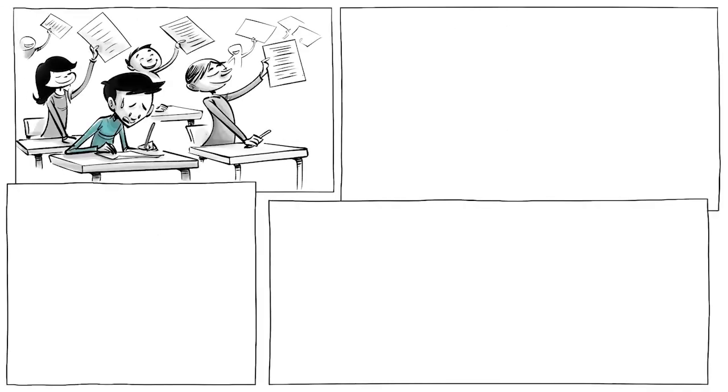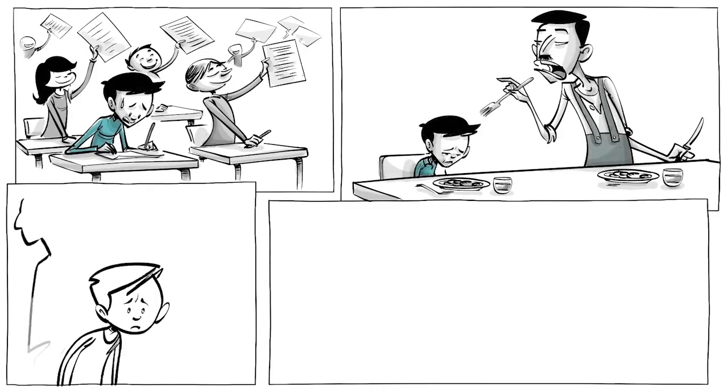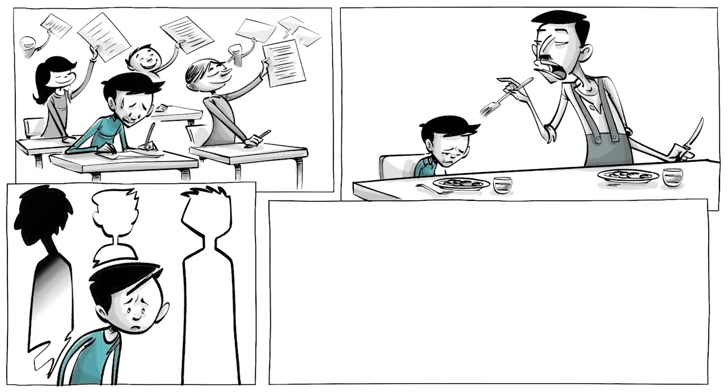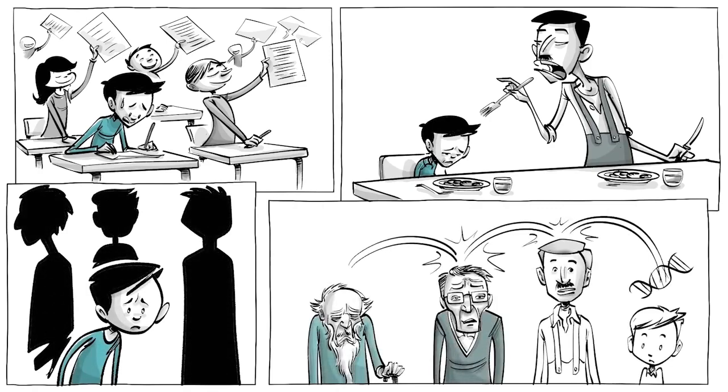But when Ingvar started school, he struggled and at one point his father told him he would never amount to anything. What nobody knew back then was Ingvar had dyslexia, inherited from his ancestors just like the color of his hair.